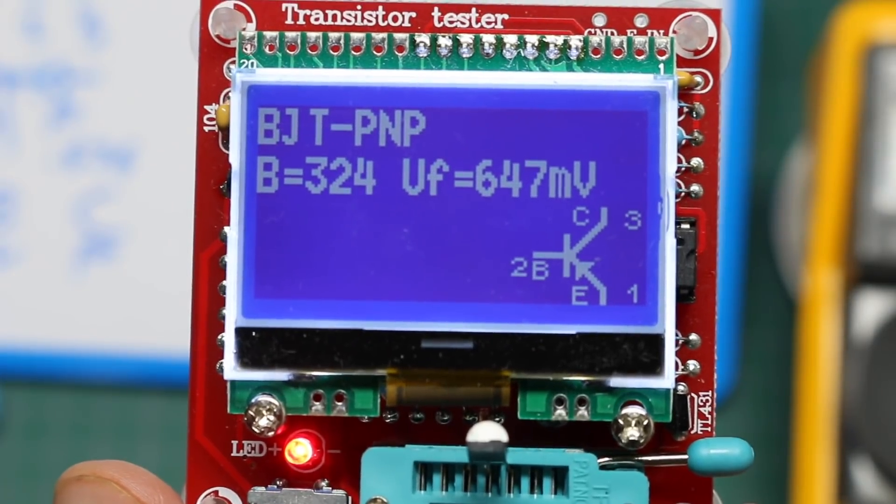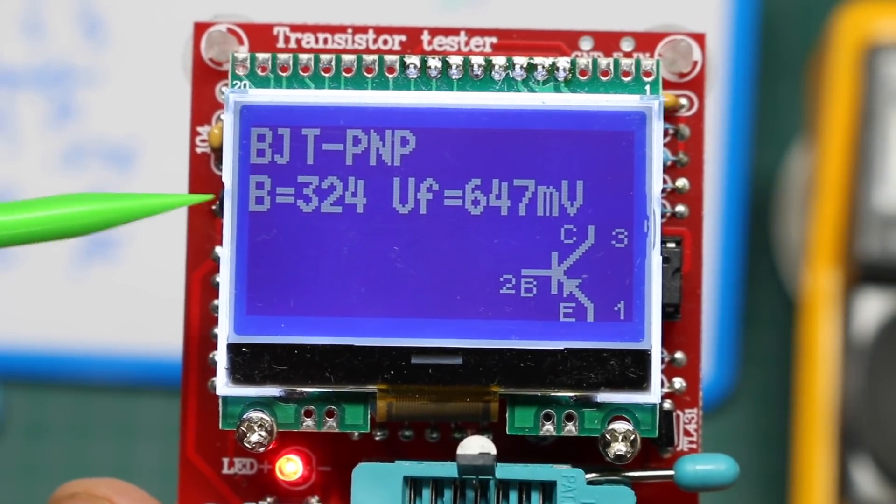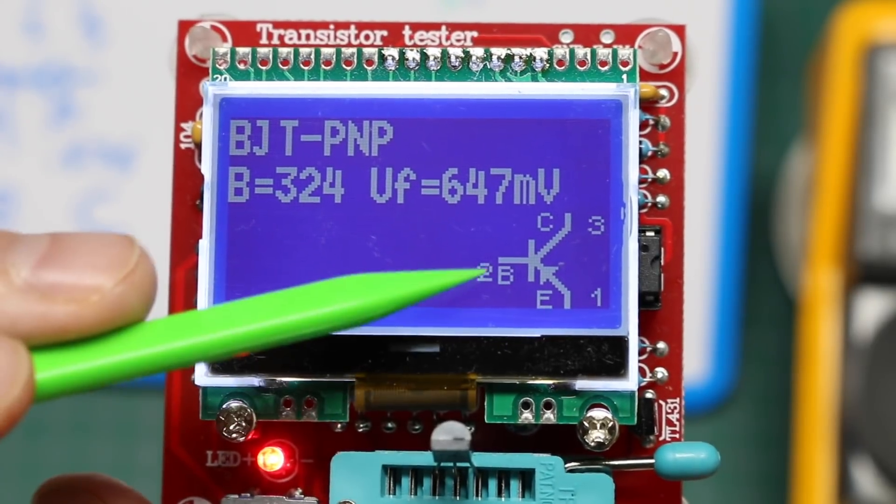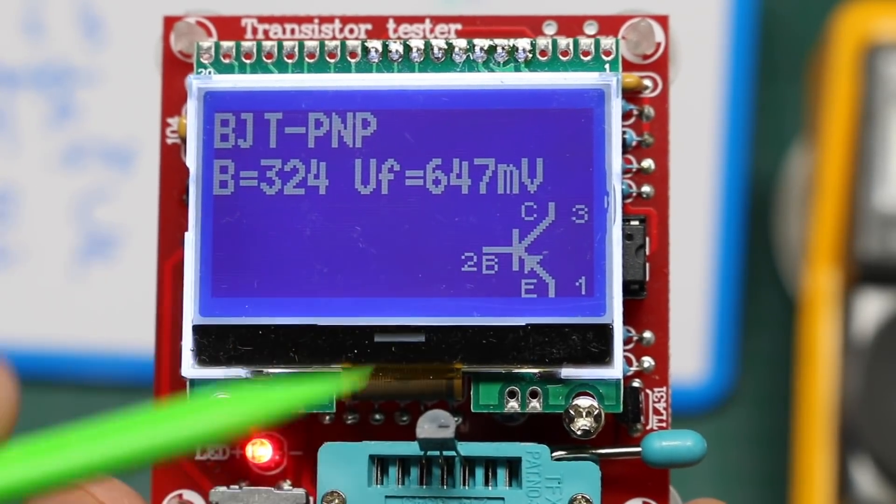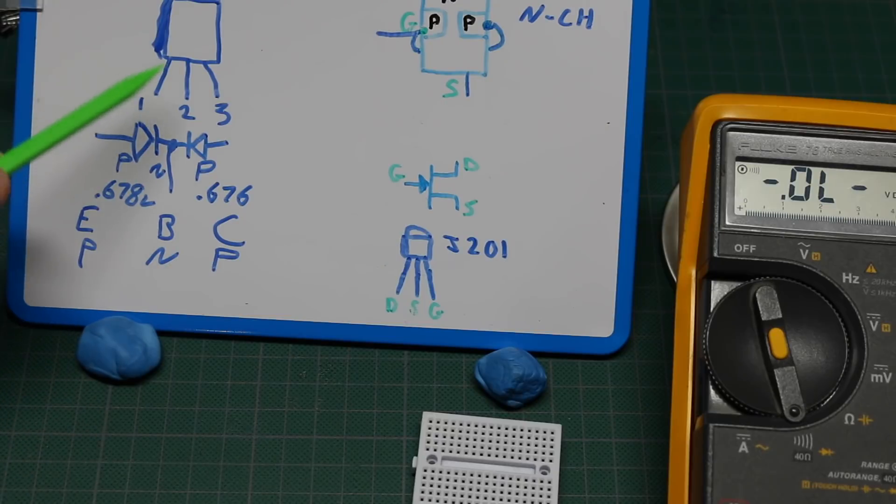It found a PNP transistor with a beta of 324, emitter base collector pins one, two, three left to right, which is what we determined from the multimeter in diode check mode.